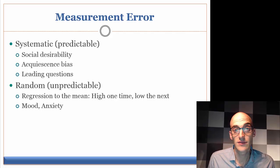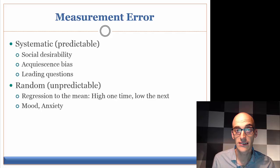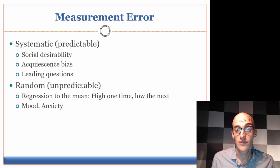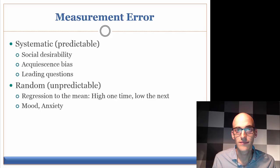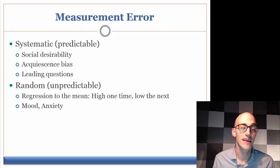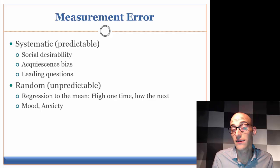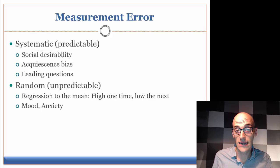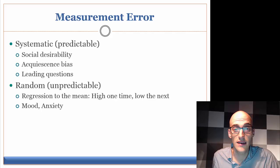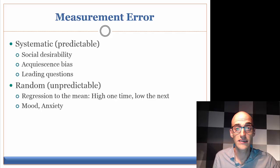Now that we've come up with a good conceptual definition and an operational definition of how we're going to measure that concept, another important thing to think about is measurement error. This is really important in social welfare research. A lot of people say that social welfare research is somewhat of a soft science because all types of research are going to have some built-in measurement error, but there are a lot of ways that researchers can prevent this from impacting the validity of their results and measurements. The book talks first about systematic measurement error.